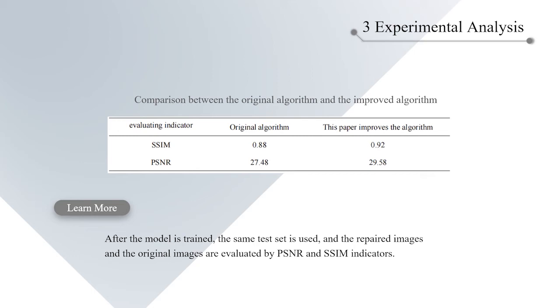The original network and the improved network model are trained respectively. After the model is trained, the same test set is used, and the repaired images and the original images are evaluated by PSNR and SSIM indicators. Among them, the larger the calculated SSIM value, the more similar the two pictures are.